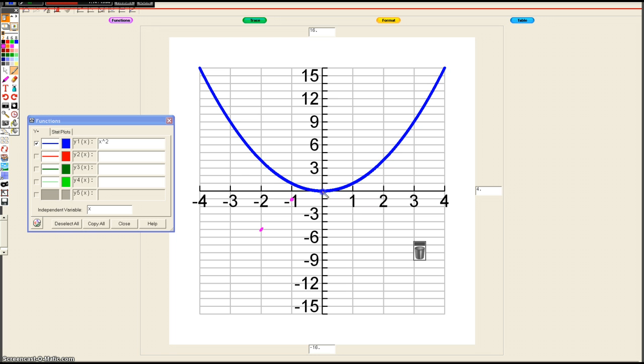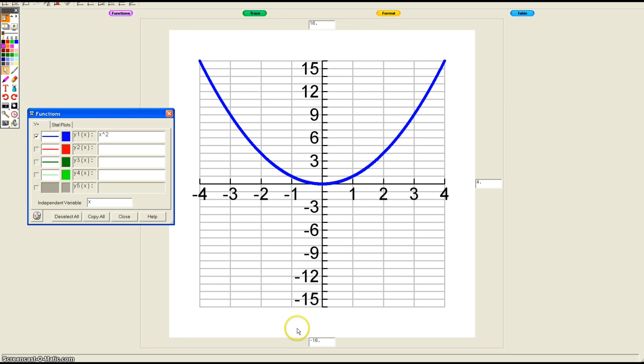Likewise, when you plug in negative 1, you used to get 1. For negative f(x), you're going to get negative 1. Similarly for all these points—you're taking the opposite of all your y-values, and the result ends up being this reflection, as we noted, over the x-axis. Those are all transformations on our y-values, transformations that affect the y-values.